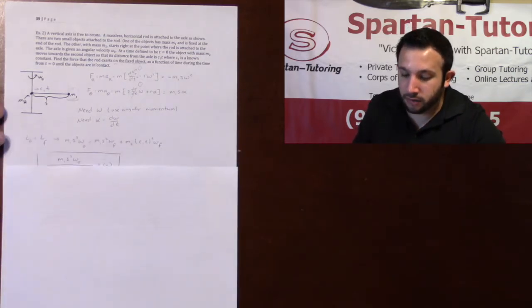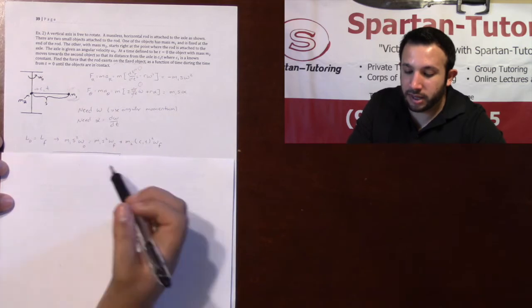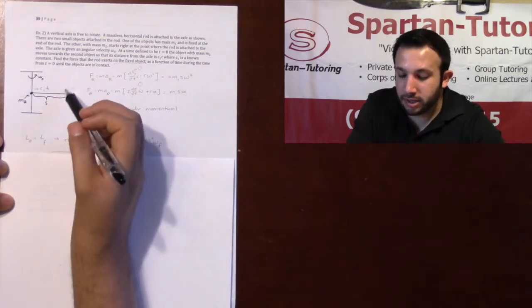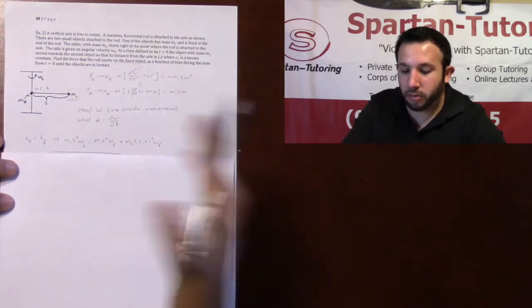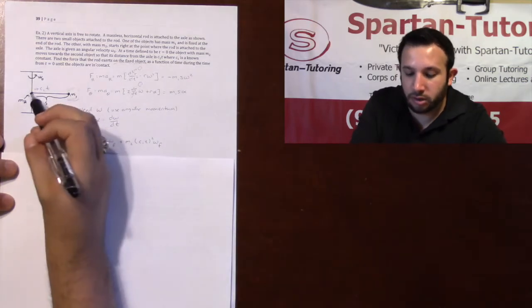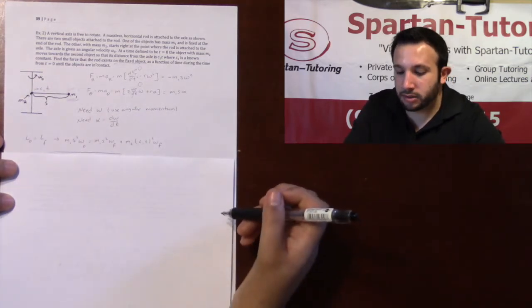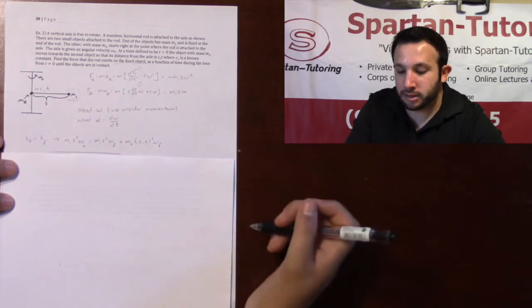Using conservation of angular momentum, I have that L0 equals Lf. And initially, m1's the only thing with angular momentum, because right at t equals 0, m2 is on the axis of rotation. It's not rotating at t equals 0.